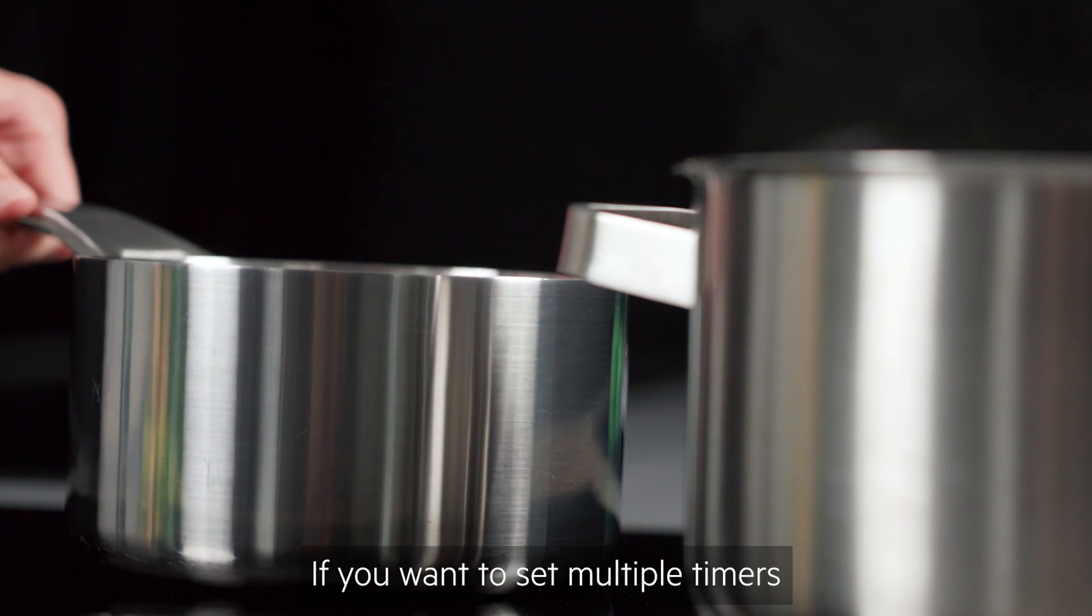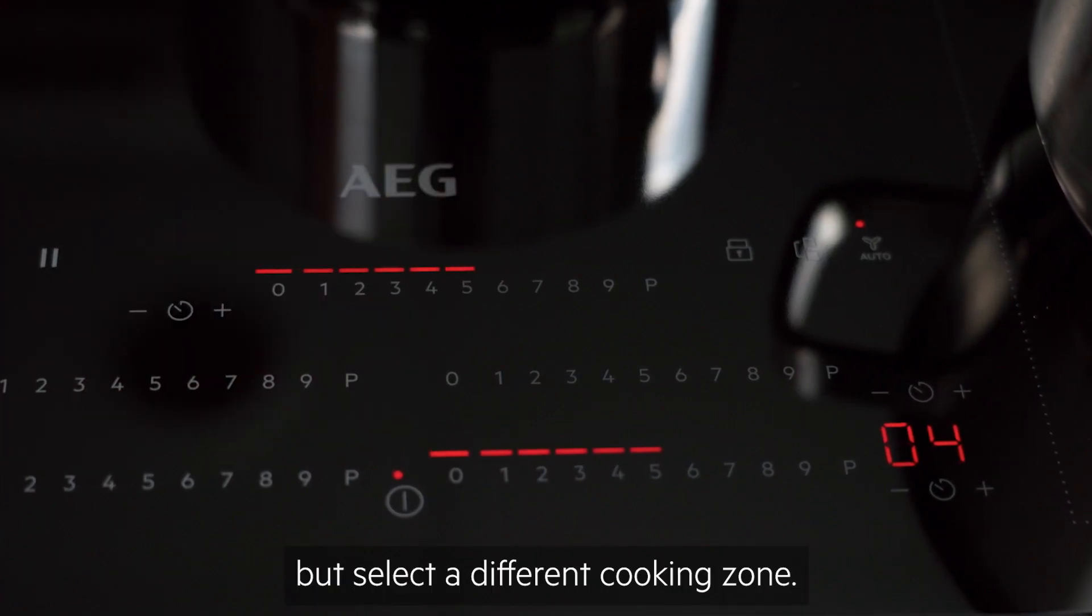If you want to set multiple timers, simply repeat the process, but select a different cooking zone.